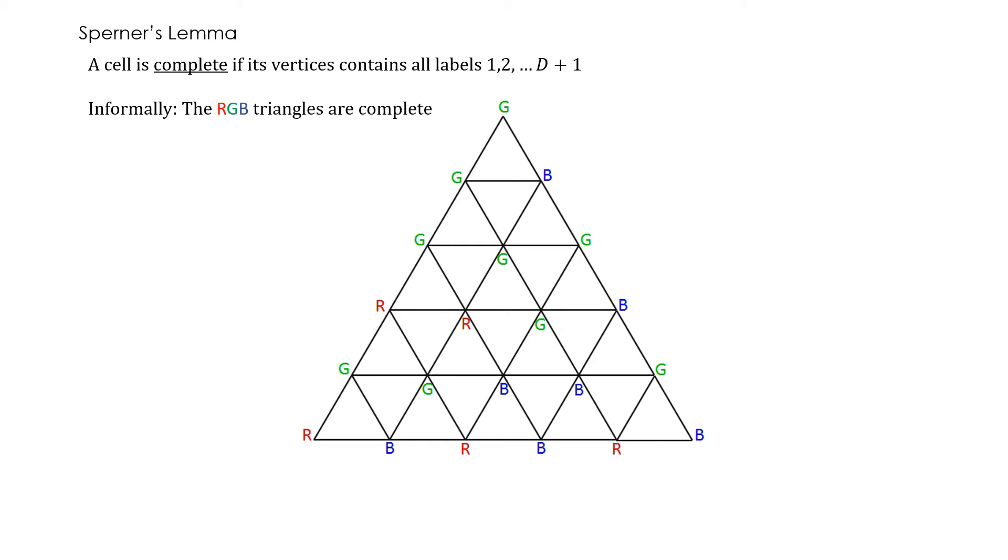A cell is complete if its vertices contain all the labels 1 through d plus 1. Informally, an r, g, b triangle is complete. So this is an r, g, b triangle. It's complete. This triangle is g, g, b. So it's not complete. This is complete. This is not complete again because this is r, b and b and so forth. And of course the large triangle is also complete.